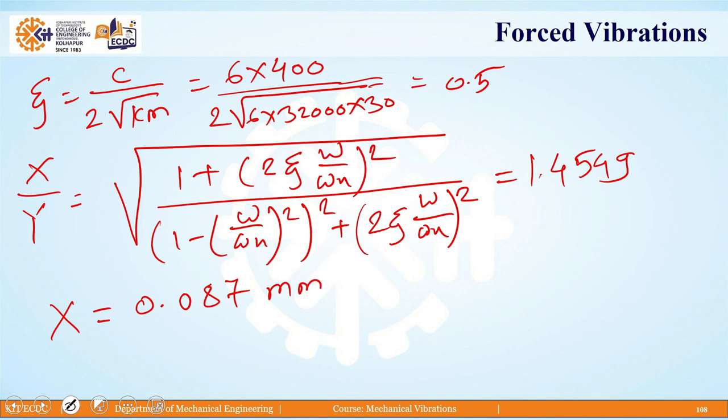This is the steady-state amplitude present when the excitation frequency is 62.8 radians per second, or 600 rpm. With this, we have come to the end of this session. Thank you.